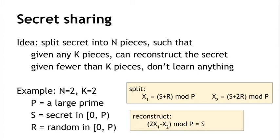What we do is we compute 2 times x1 minus x2 modulo p. So 2 times x1 is 2s plus 2r, and x2, which we're subtracting off, is s plus 2r. And so we have 2s minus s, that leaves us with an s. We have 2r minus 2r, and so the 2rs cancel out. And we're left just with s mod p, which is equal to s, because s is less than p.